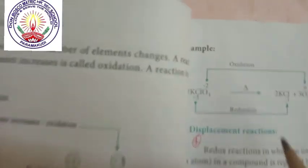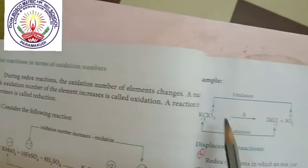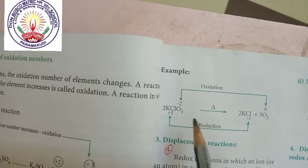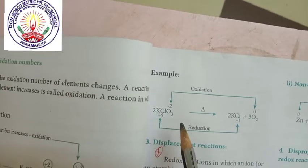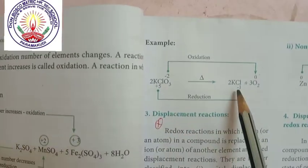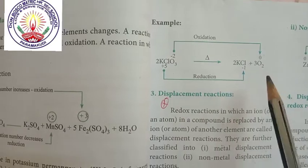See page number 23 for an example — potassium chlorate decomposes to give potassium chloride plus oxygen.